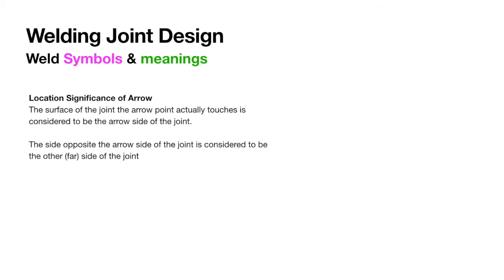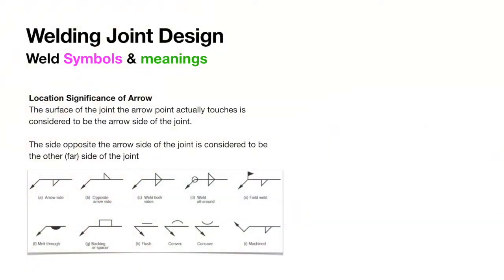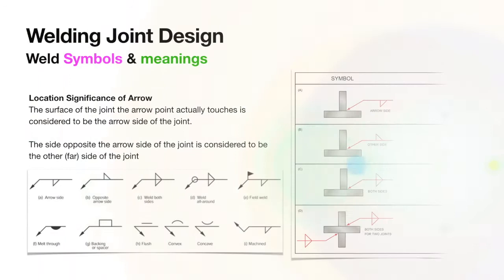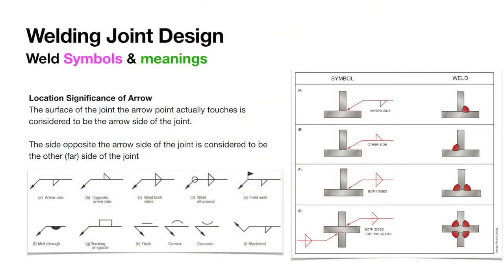In the case of fillet and groove welding symbols, the arrow connects the welding symbol reference line to one side of the joint. If the weld is to be deposited on the arrow side of the joint (near side), then the proper welding symbol is placed below the reference line. If the weld is to be deposited on the other side of the joint (far side), then the welding symbol is placed above the reference line. If the fillet is present on both sides, then the triangle appears on both sides of the reference line.